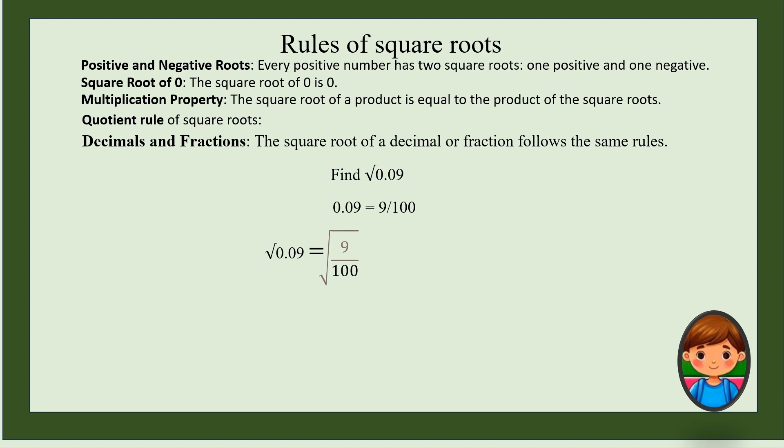Square root of 9 by 100 is same as square root of 9 by square root of 100, which equals 3 by 10, which equals 0.3. Now you can verify your answer by doing 0.3 times 0.3 equals 0.09.